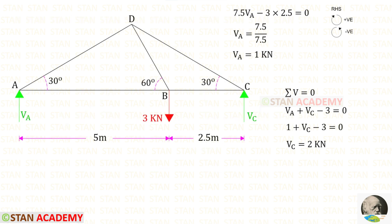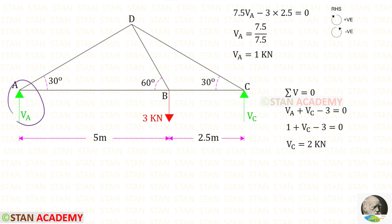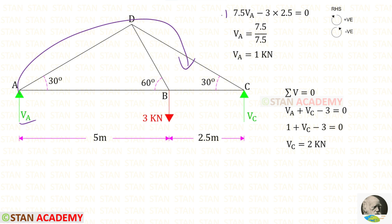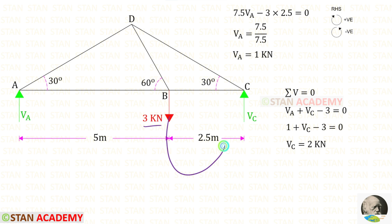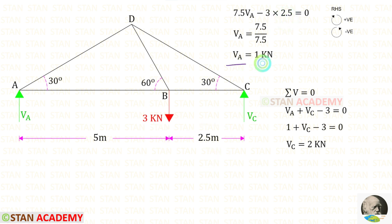We have to find the vertical reactions Va and Vc. First let us find Va. For that I am going to take a moment about C. Va is acting in the clockwise direction so that it will be positive and the distance is 7.5. This load is acting in the anticlockwise direction so that it will be negative and the distance is 2.5. For Va we will get 1 kN. By using the rule sigma V is equal to 0 we can find Vc.